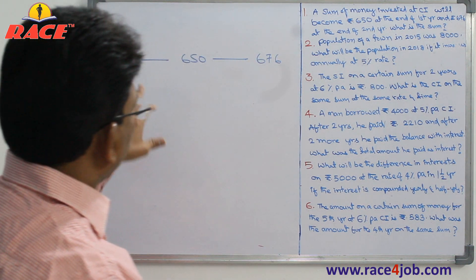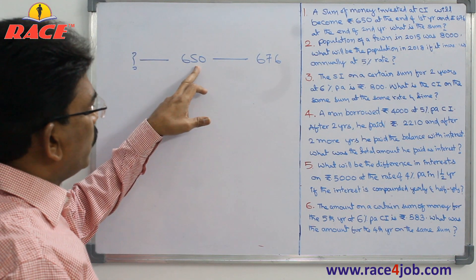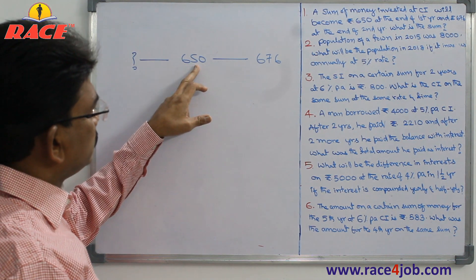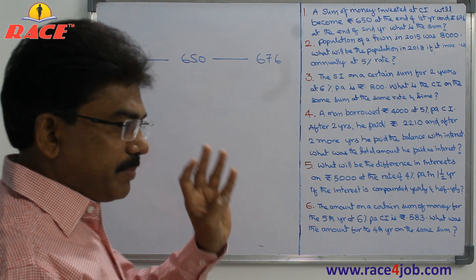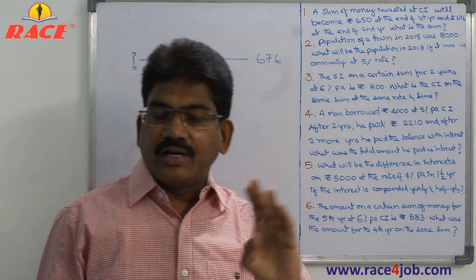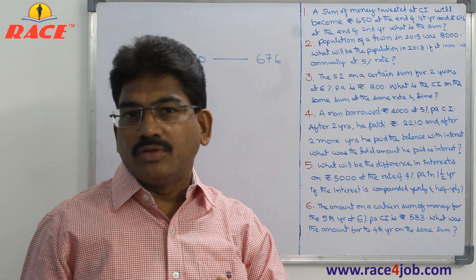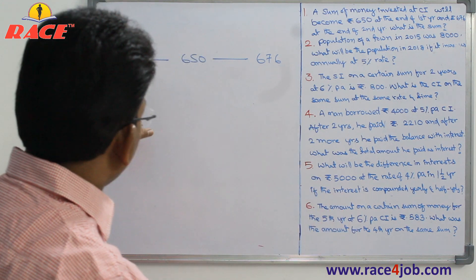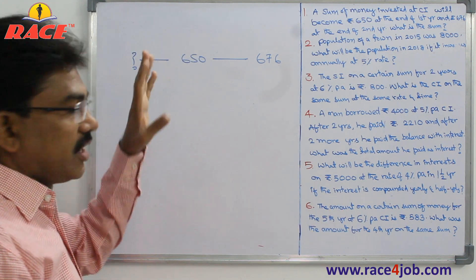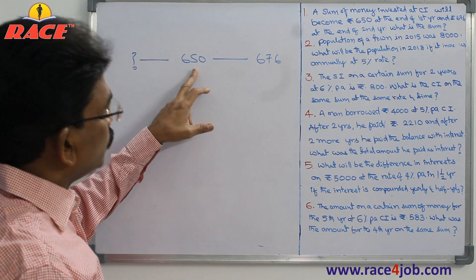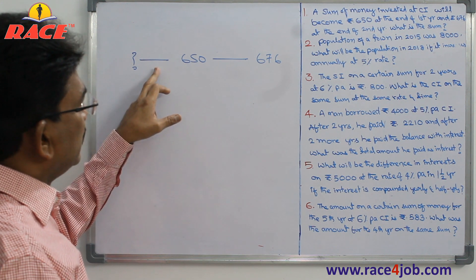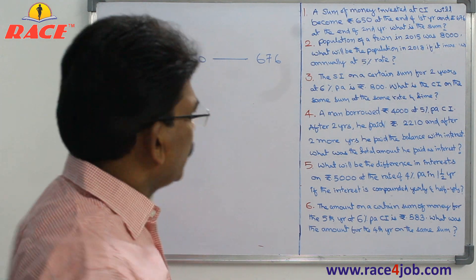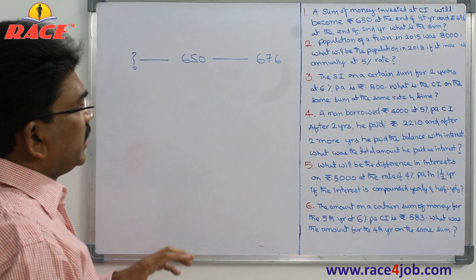To find out the principal, time is 1 year and amount is 650. For principal we need: amount, rate of interest, and time. Out of these 4 variables, if 3 are known we can find the 4th. We have to find the principal, so we need the rate of interest. Already amount and time are there, but we need the rate of interest. How to find the rate of interest?